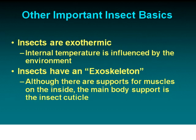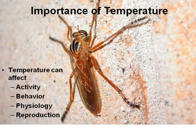There are some other important insect basics beyond how the insect looks. Insects are exothermic — their internal temperature is influenced by the environment — and this has many implications. Insects also have an exoskeleton, meaning the main body support is the cuticle, the outside skin. While there are some semi-hard parts on the inside that support muscles, the exoskeleton is the primary structure, and this is important mostly for control purposes.